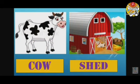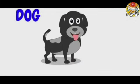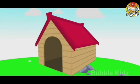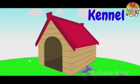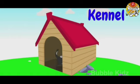See children, which animal is this? Cow. And where does a cow live? Shade. Cow lives in a shade. Next is dog. Where does a dog live? Yes, dog lives in a kennel.